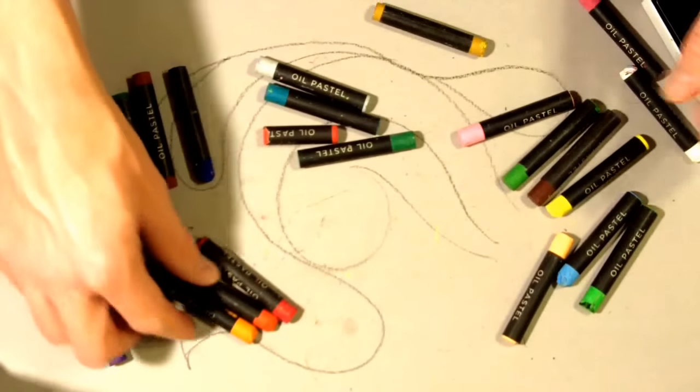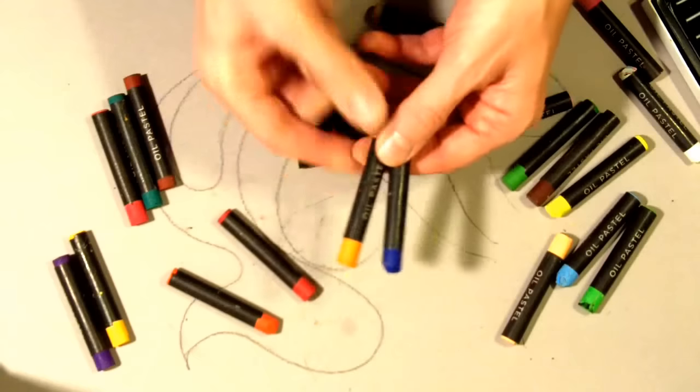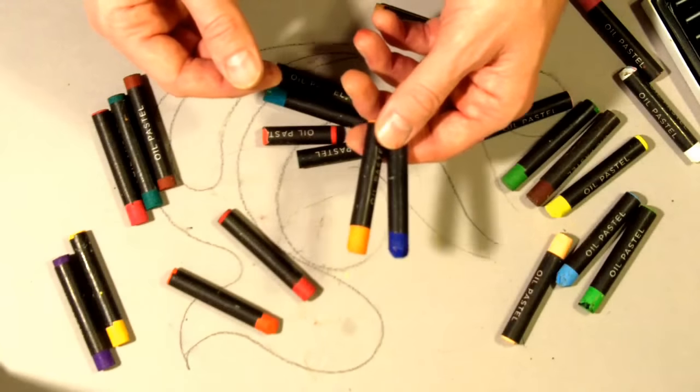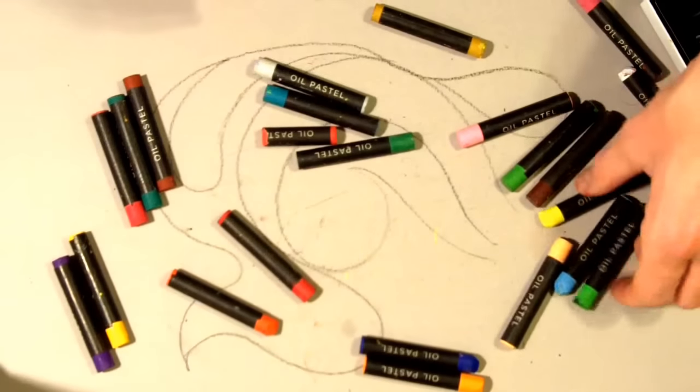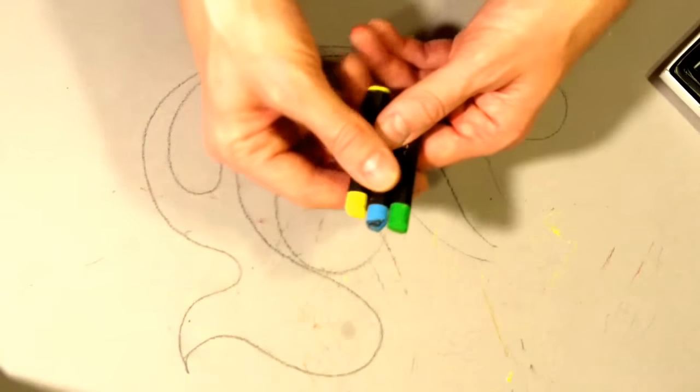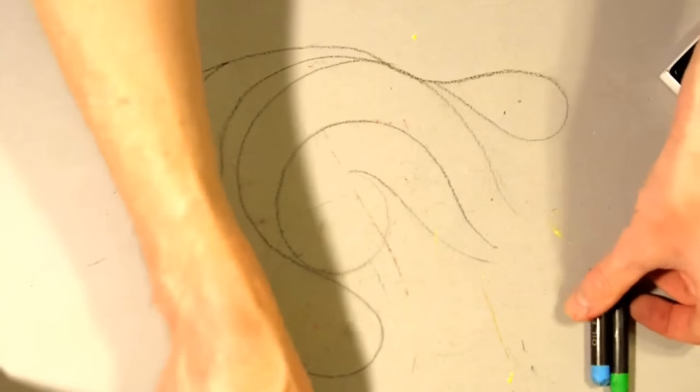And then the last one would be orange and blue. Those don't mix together. They make kind of an ugly puke brown color. Other than that any colors will blend together nicely. So let's take a look at the rule of threes.